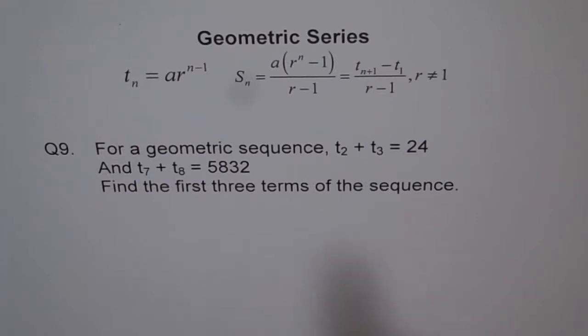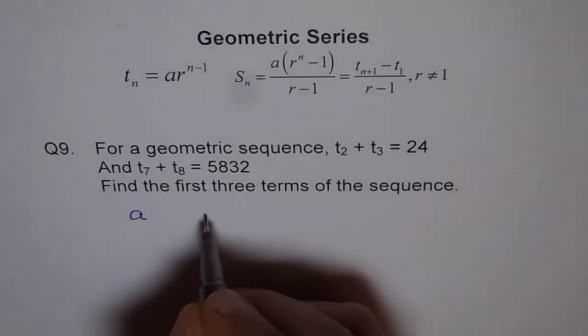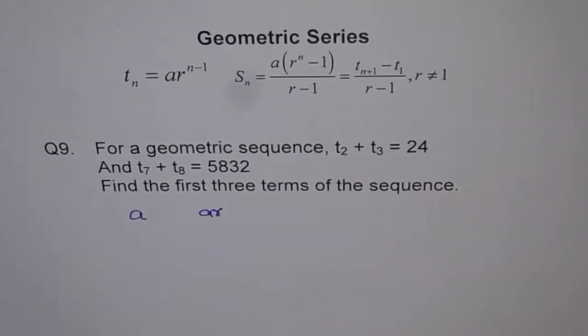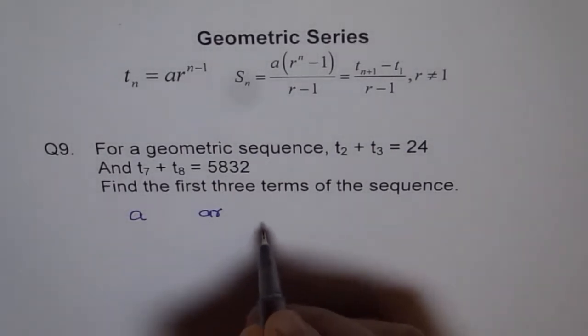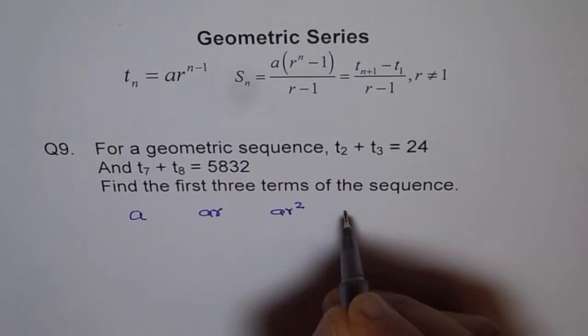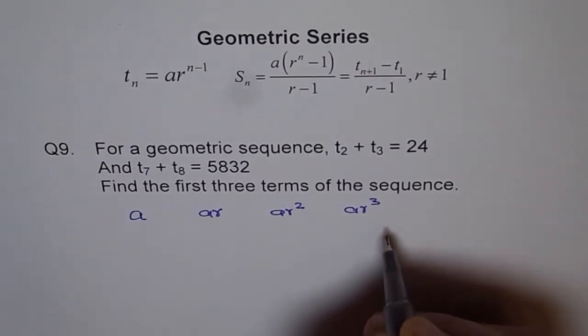It starts with let's say a. If a is my first term then the next is a times r. Because in geometric sequence, every subsequent term is multiplied by a factor r. And next term will again be multiplied by r. So we get a r square, and then we get a r cube.